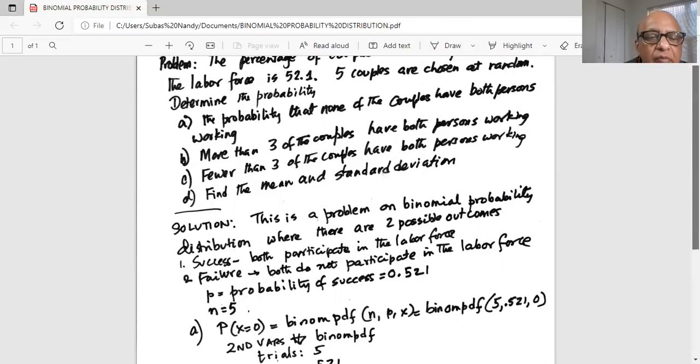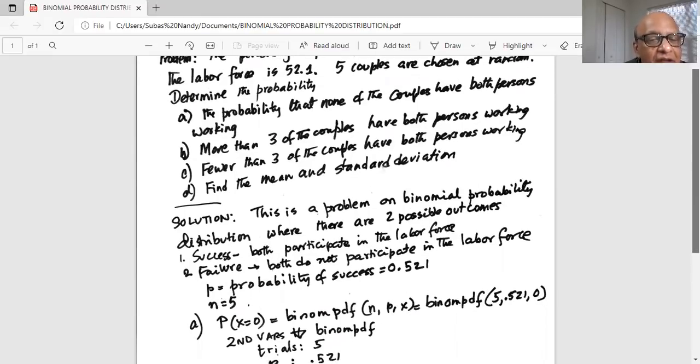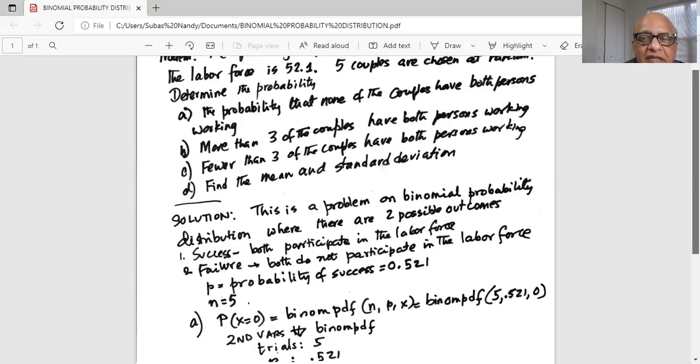So the first part asks determine the probability that none of the couples have both persons working. That means we are looking for probability of x where x is the number of couples where both are participating in the labor force. In this case, none of them are participating, so x equals zero.